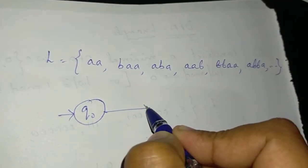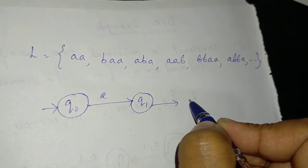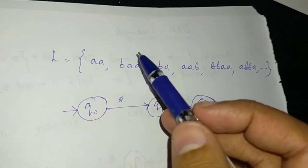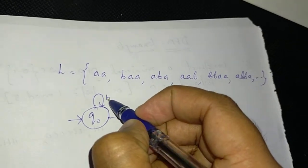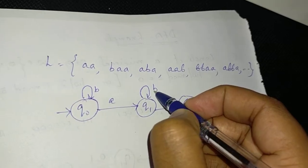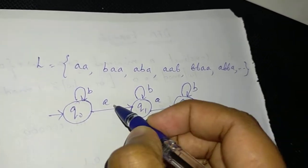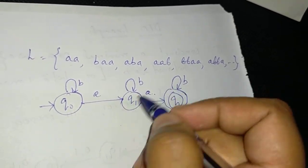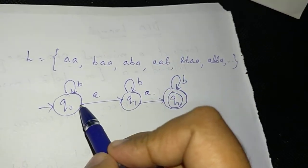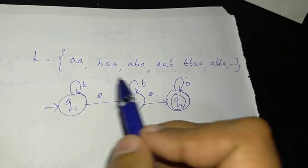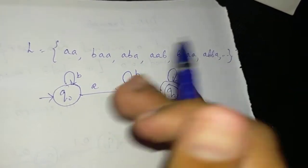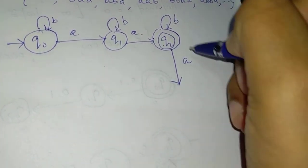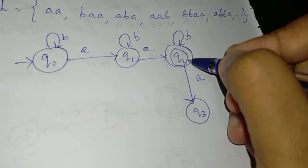So we construct: Q0, then on A go to Q1, and Q1, and Q2. If we draw on A, the transitions — B goes to the same state (self-loop), A goes to the next state. So Q2 has a self-loop on B, and A goes to Q2 as well. If we get 2 a's we can accept, but if we get 3 a's we go to a dead state Q3. This is a dead state — it is not a final state.